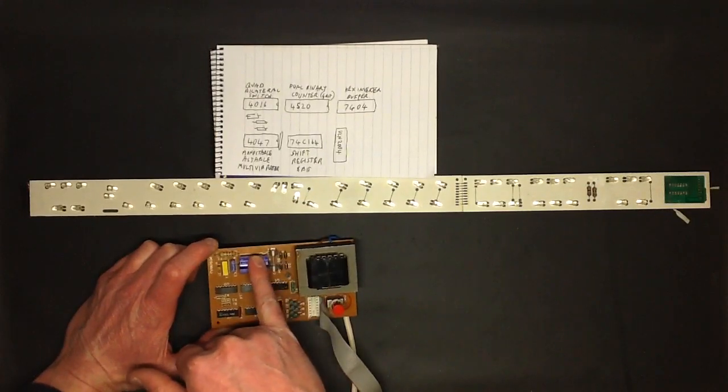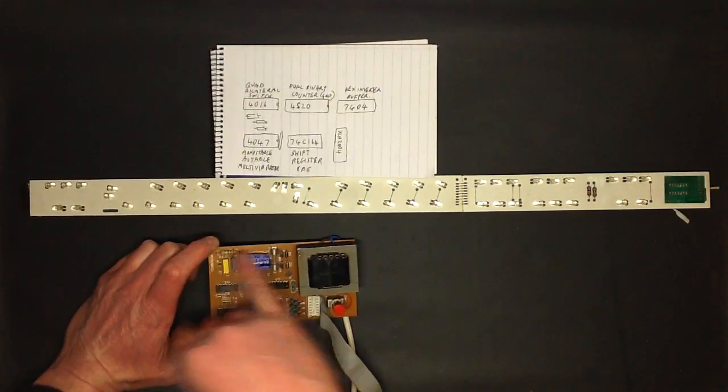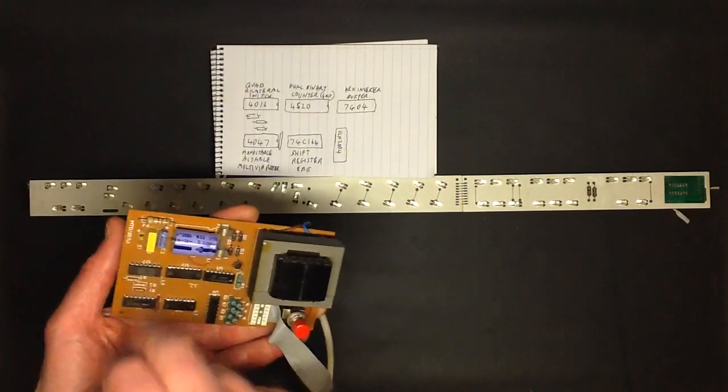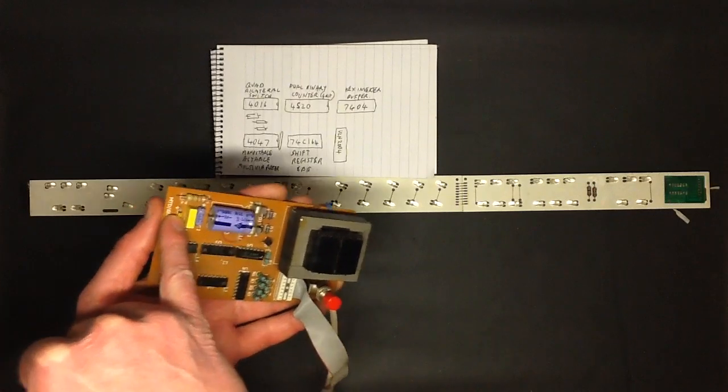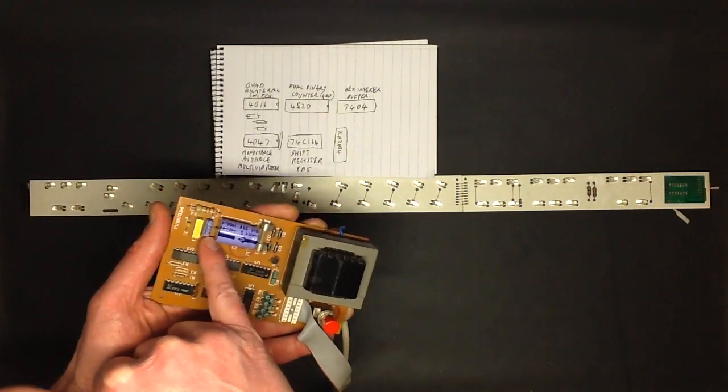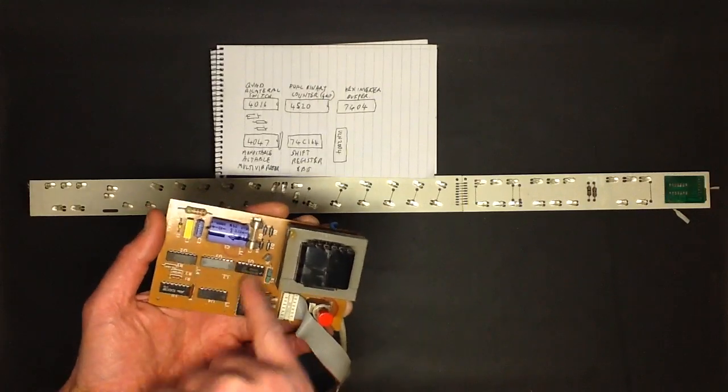Goes to a bridge rectifier via the fuse. And then it goes to a smoothing capacitor. Then there's a 220 ohm, I'll move this up closer in fact. There's a 220 ohm resistor, limits the current. And there's a Zener diode, drops it down to 5 volts for the logic. And then there's a couple of... there's a decoupling capacitor and a smoothing capacitor for the 5 volts. And then that's fed to all the chips.